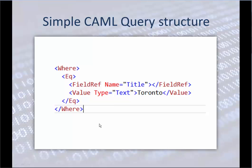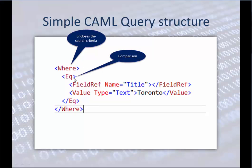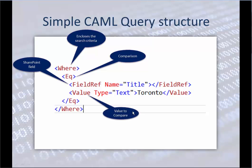This is the simplest CAML query I could put together. We have a Where statement that encloses the search criteria. Then we have a comparison — at the moment it is Equal To, but all those comparison conditions go here. The next element is the SharePoint field reference, which is the field in the list we want to search. Then there is the value to compare — the string or value we want to match.